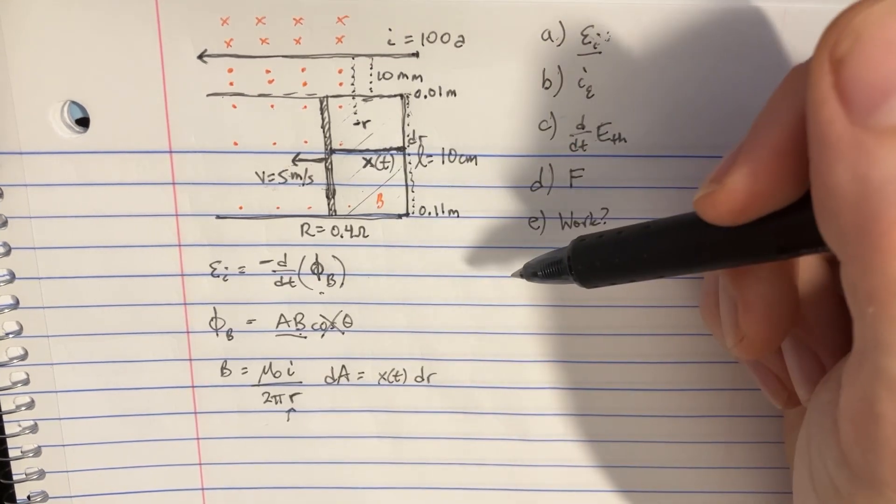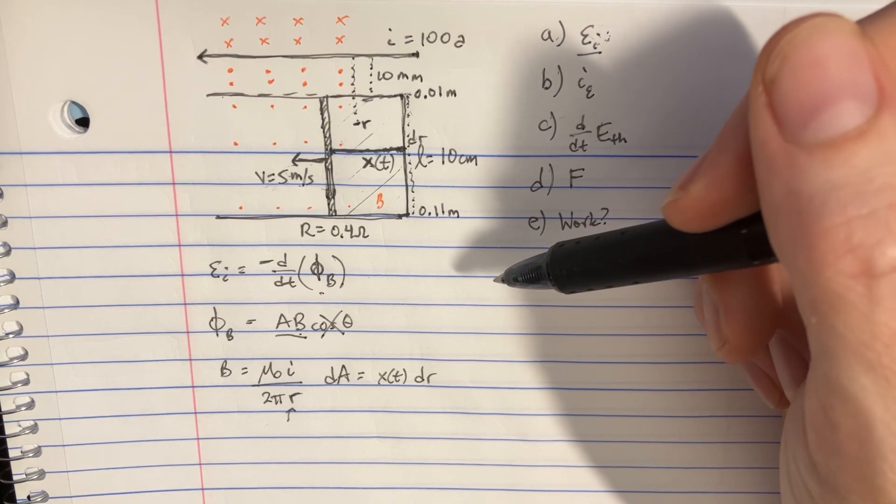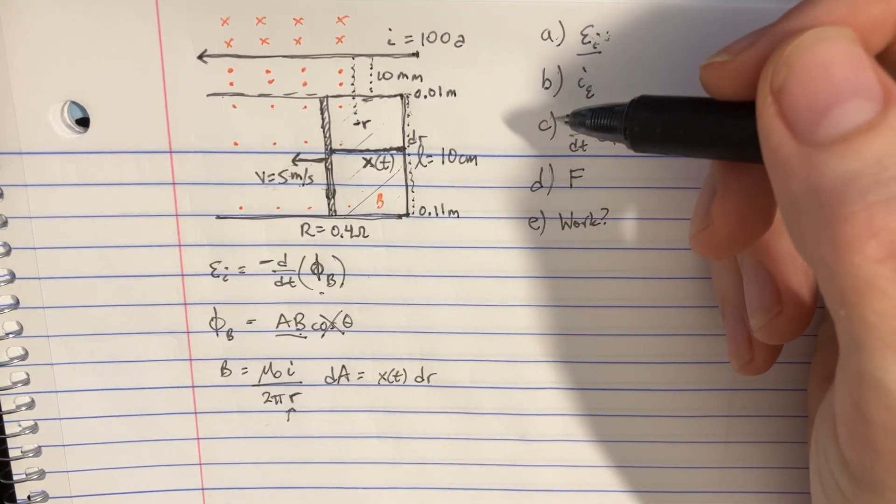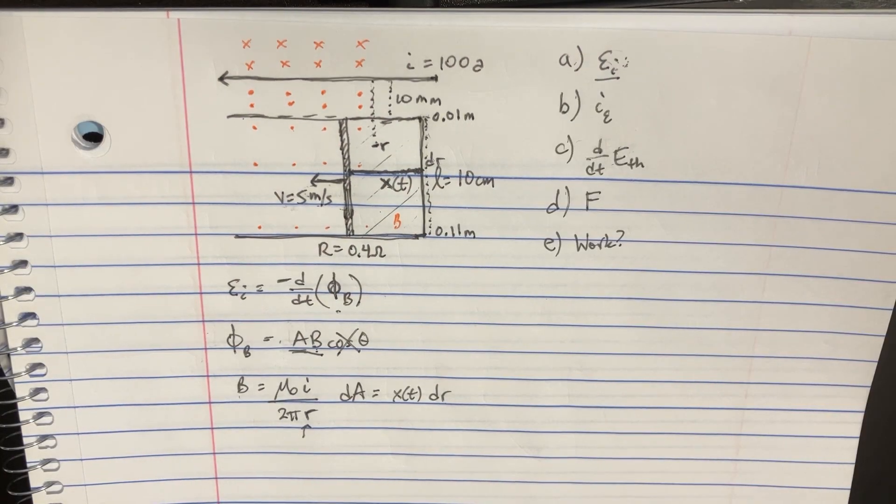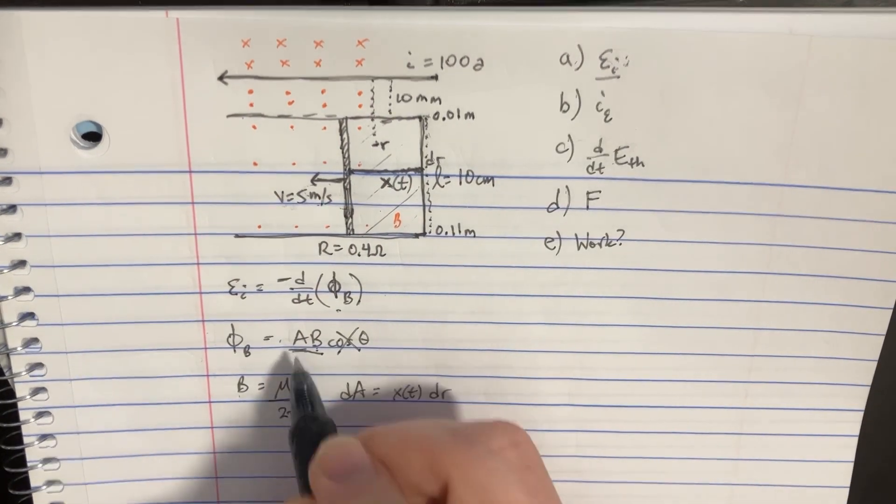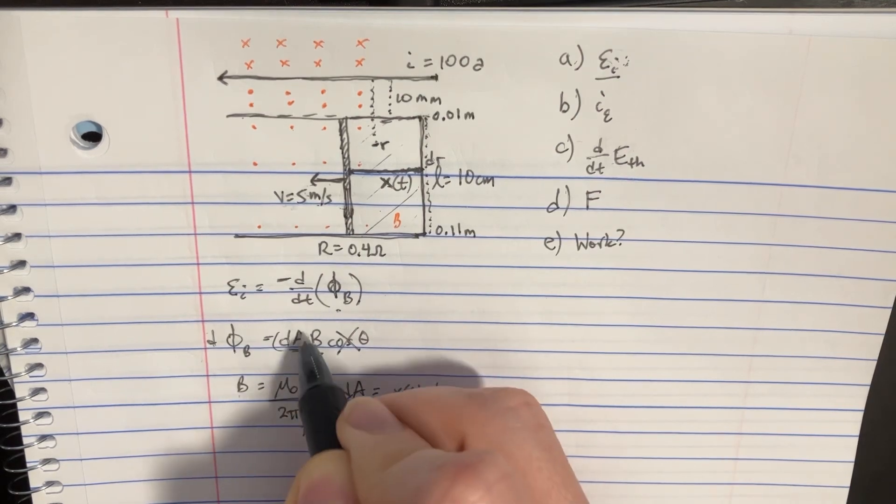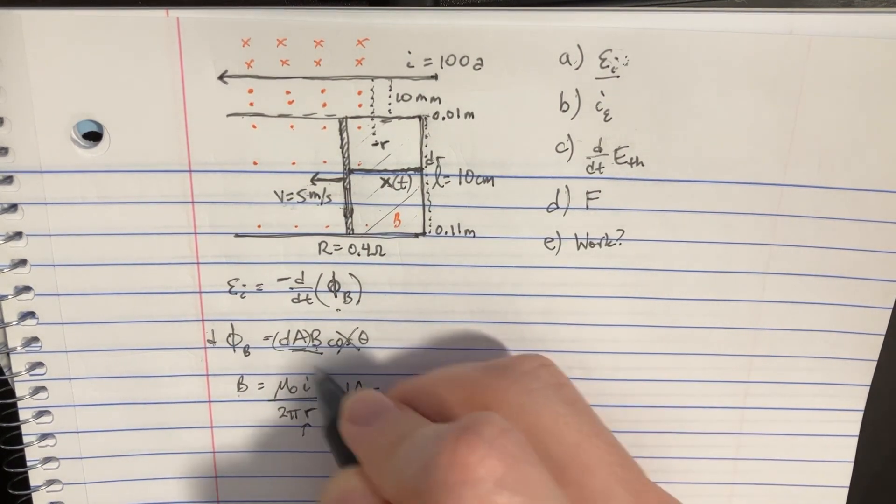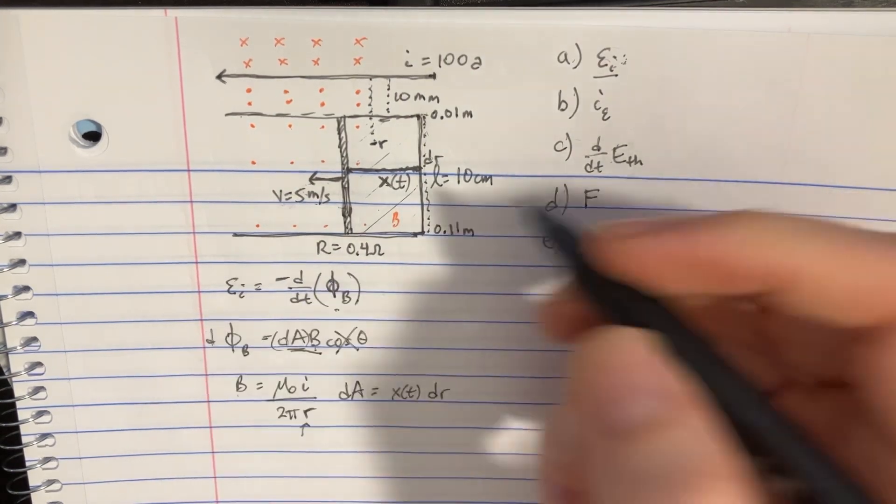And now we've got our dr, so that's really nice. So all we just got to do is multiply those two things together and integrate. In order to solve this, let's go ahead and just slap the d on both sides here. We know that the d is going to go with the a here, because that's the thing that's changing, not the b. And so we'll just replace that in there, and we'll be able to integrate this.